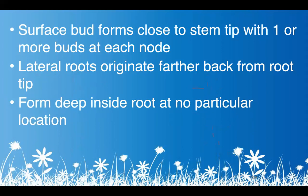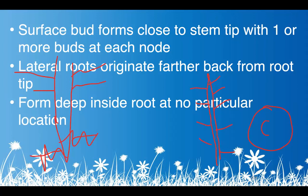Lateral roots form deep inside the root at no particular location as long as it's within the pericycle — it doesn't matter which point. But for stems, lateral shoots have to grow at the nodes; they can't grow from just anywhere along the stem.